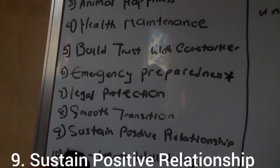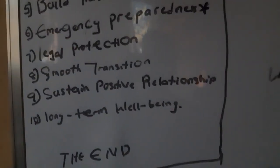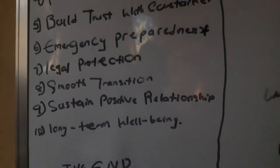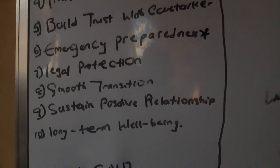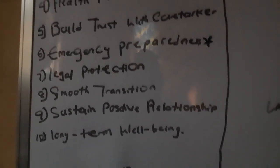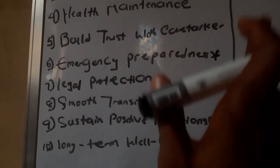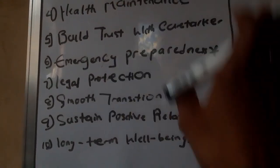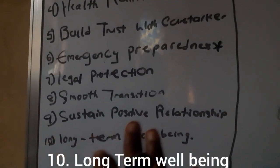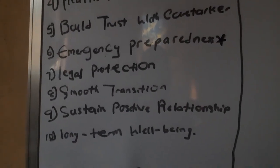Number nine is sustained positive relationships. If you have more than one caretaker, you all will come together and bring up different opinions on how to improve the farm, and that is what builds a positive relationship between you all.